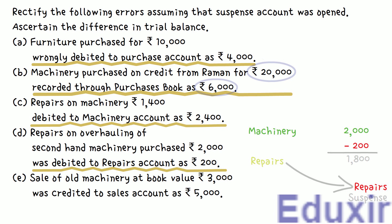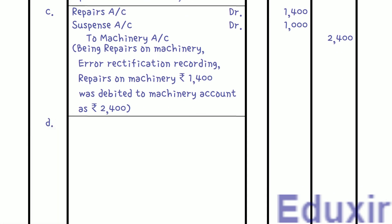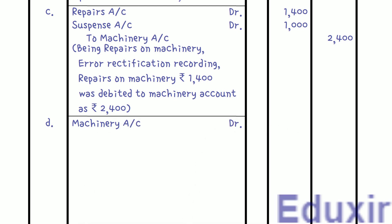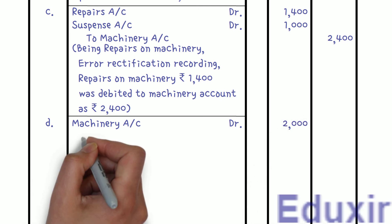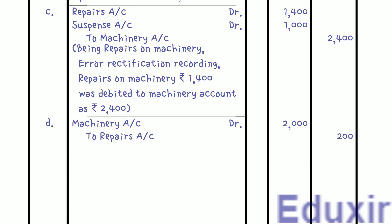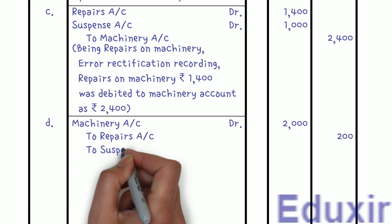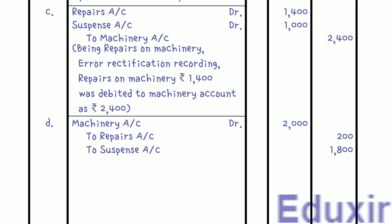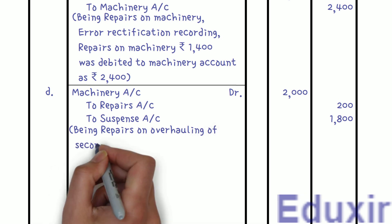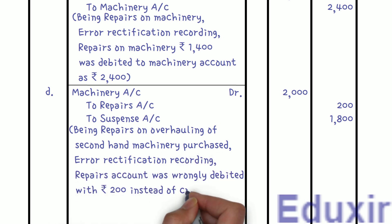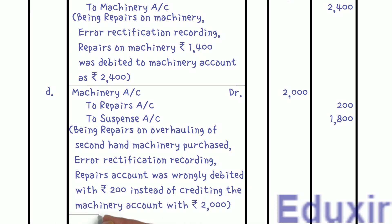Entry 4: Machinery Account Dr. 2,000 rupees; Repairs Account Cr. 200 rupees; Suspense Account Cr. 1,800 rupees. Narration: Repair account was wrongly debited with 200 rupees instead of crediting the machinery account with 2,000 rupees — Error Rectification Recording.